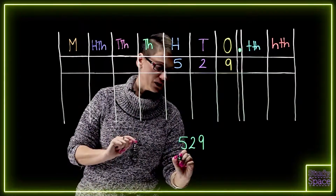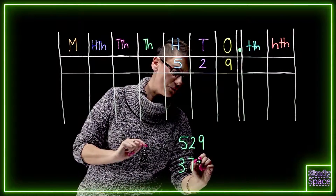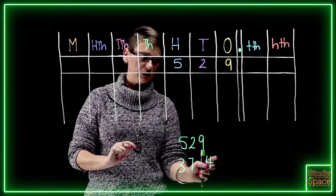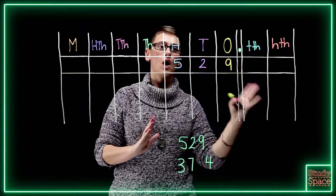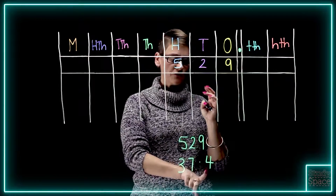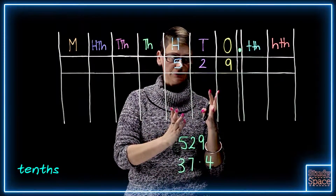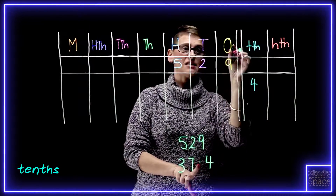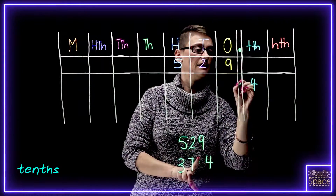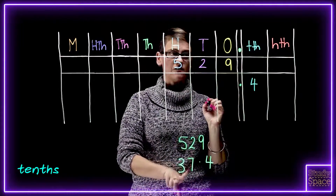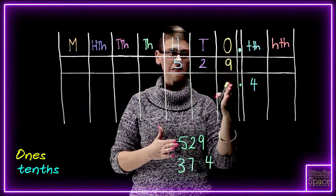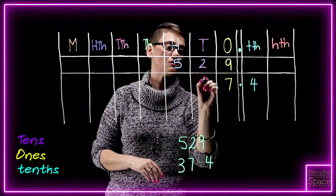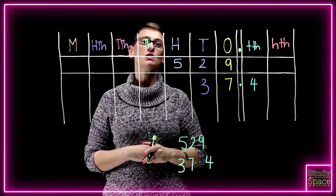Let's have a look at another example. If my number is 37.4, I've got a whole number and a part of a number. Again, we're working right to left. We put the four in, which is worth a tenth — so that goes in the tenths column. We need to put our decimal place in because it doesn't move. Then we've got our seven, which is a whole number worth ones, and the three, which is worth 30 — so three in the tens column.